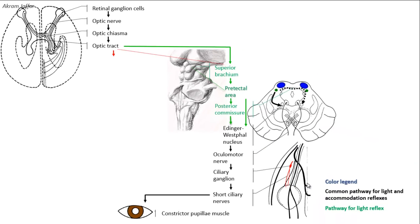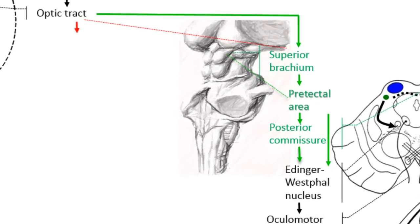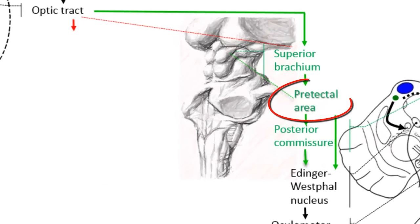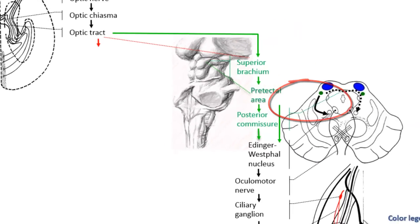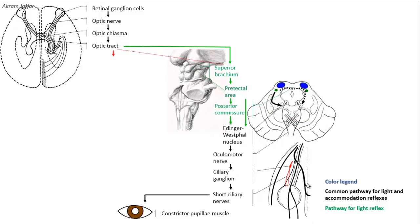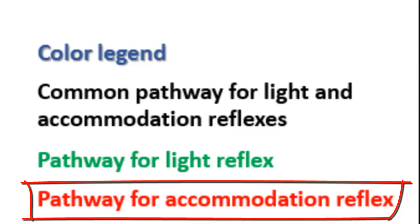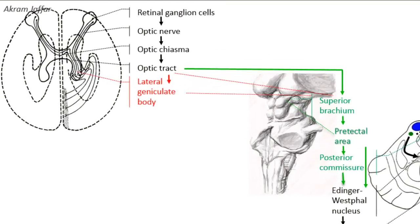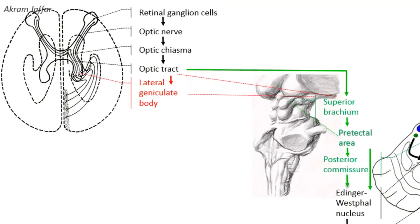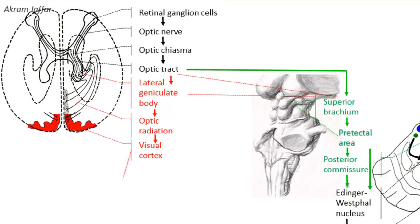Instead of taking a detour and going to the pre-tectal area, most of the fibers of the optic tract will in fact synapse in the lateral geniculate nucleus of the thalamus. From the lateral geniculate nucleus, second-order neurons carry the impulses through the optic radiation to the visual cortex.